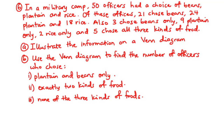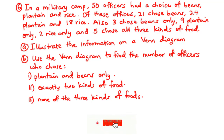In today's video, we are going to solve question 6 of WASI 2021 Mathematics Paper 2. In a military camp, 50 officers had a choice of beans, plantain and rice.